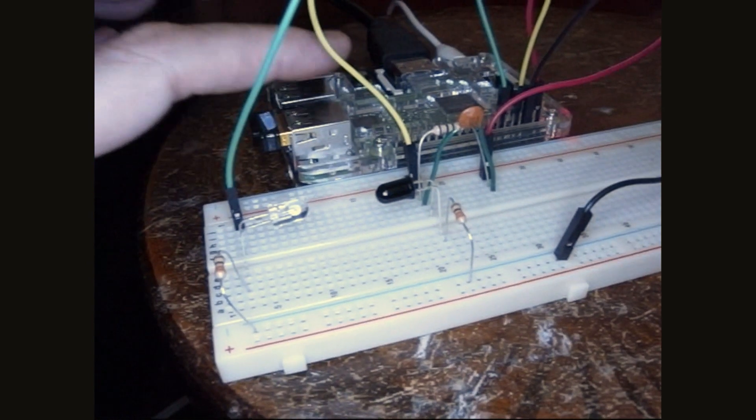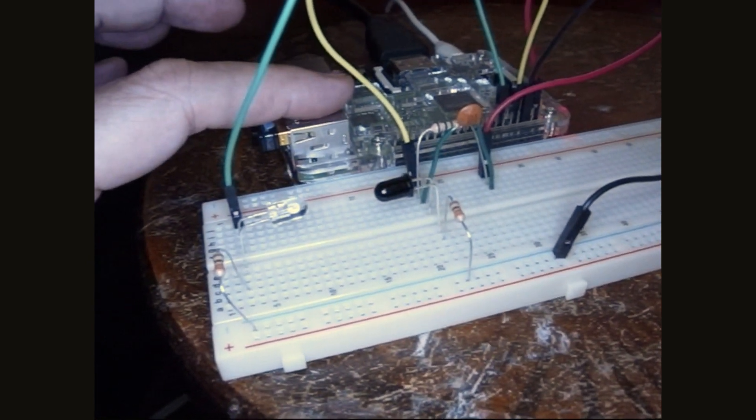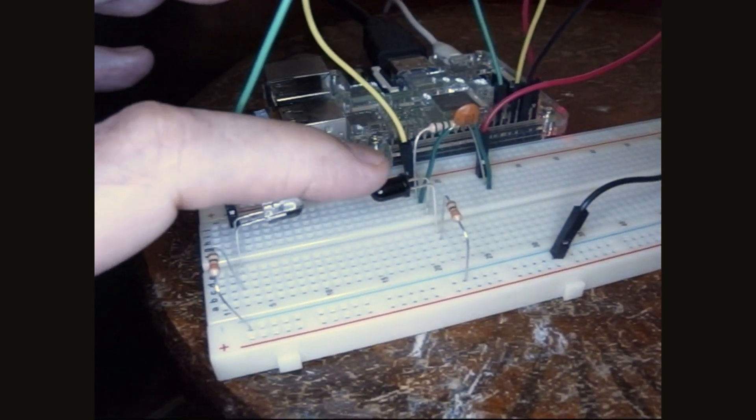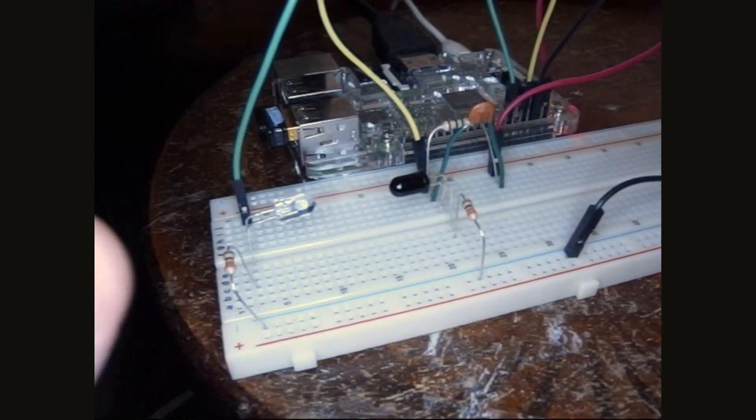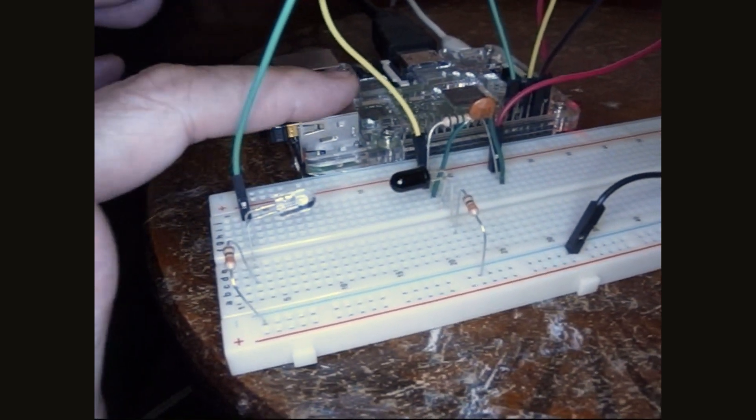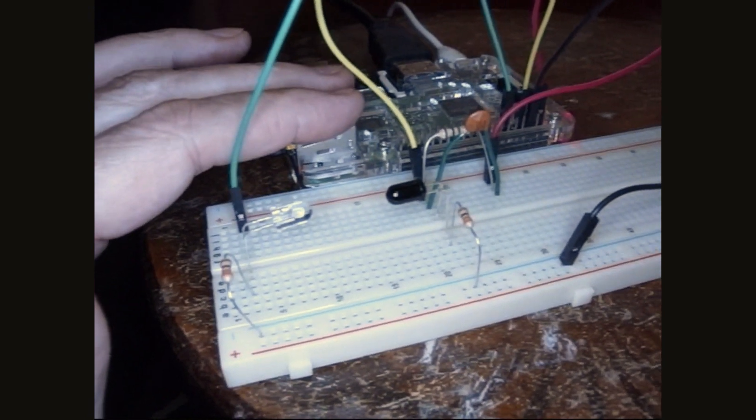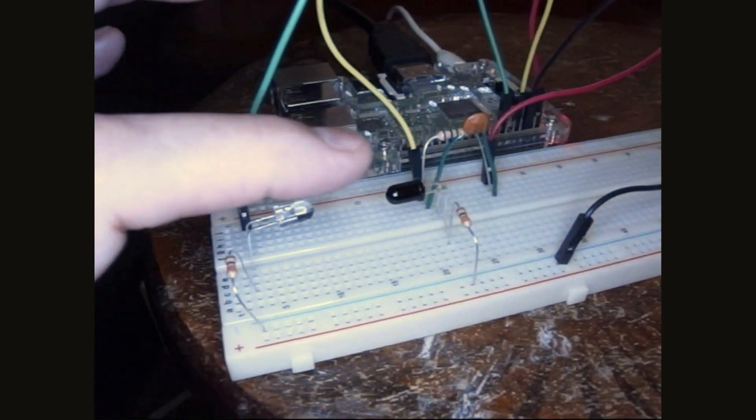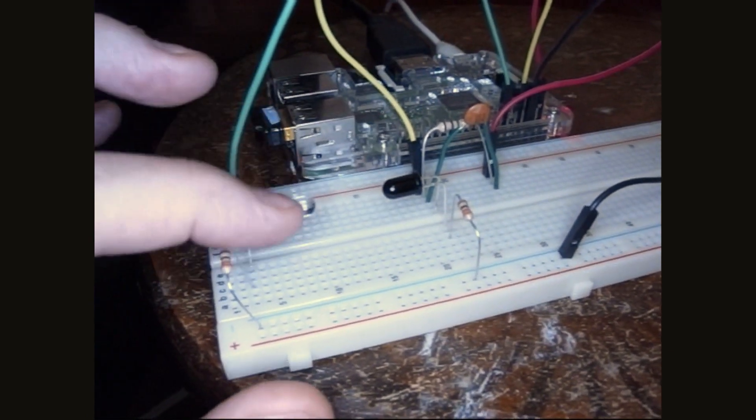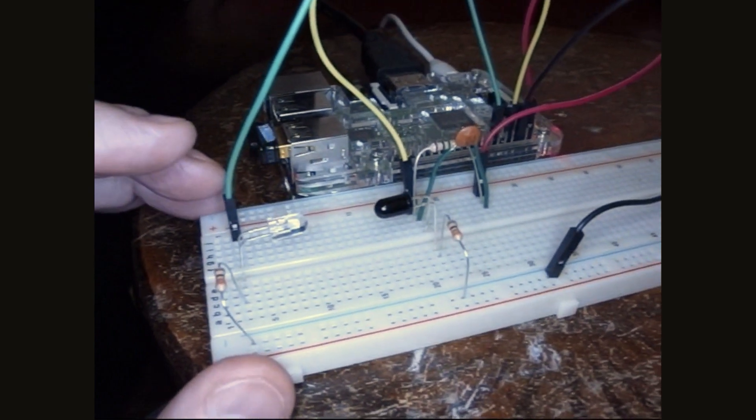Interrupts are interesting because they allow the Pi to continue functioning with something else, and only when it detects a change in the input will it jump and branch and go off and do something else. The Pi can continue to do a function, and it doesn't have to just sit and wait on the input. So let's look at that.